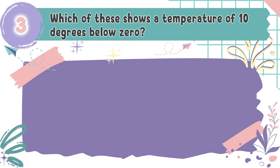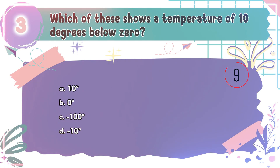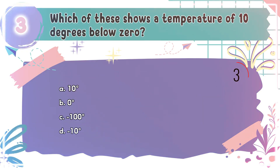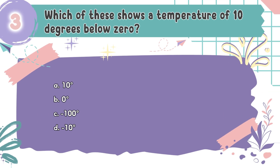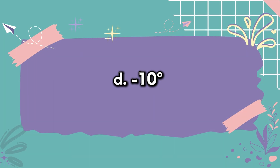Question number 3: Which of these shows a temperature of 10 degrees below 0? The choices are A. 10 degrees, B. 0 degrees, C. Negative 100 degrees, D. Negative 10 degrees. The correct answer is D. Negative 10 degrees. Below 0 means the number is negative, so 10 degrees below 0 is written as negative 10 degrees.